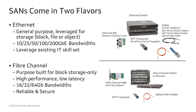Fibre Channel SANs, on the other hand, are designed for only one thing: block storage connectivity. They deliver high-performance, low-latency I/O over a secure, highly reliable network. Fibre Channel is not used for file or object storage.